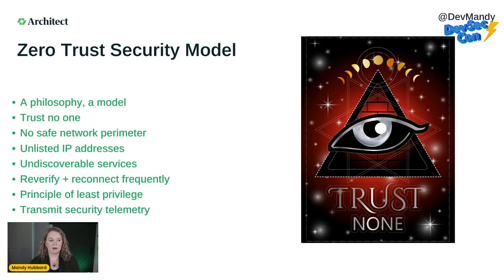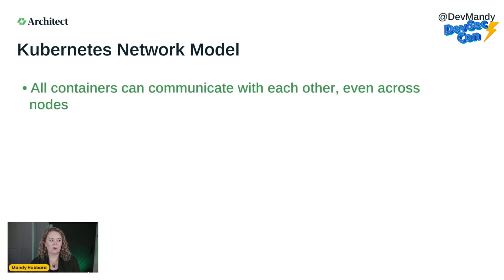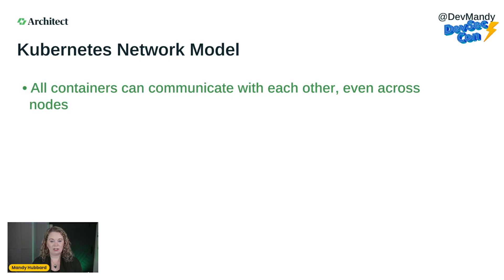That's the zero trust security model. Now let's talk about the Kubernetes network model. Once you understand how networking is set up in Kubernetes by default, you can understand why it's so important to be intentional about your network security. All containers in a Kubernetes cluster can communicate with each other, even across nodes. Your cluster consists of various nodes, on which you have pods that run your containers. Without an explicit network policy, all pods can speak with one another, and they're accessible by the outside world — all connections are wide open.